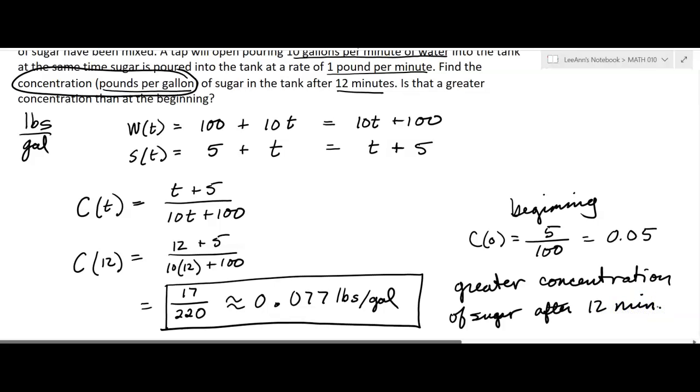So now we have almost 0.08 and we started out with 0.05, so it's getting sweeter. That's an example of how you might use a rational function and how to evaluate and interpret it.